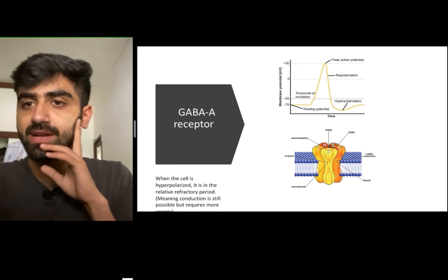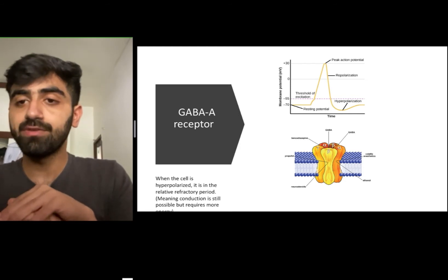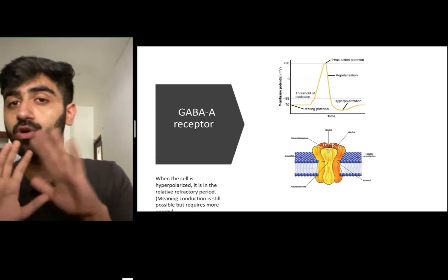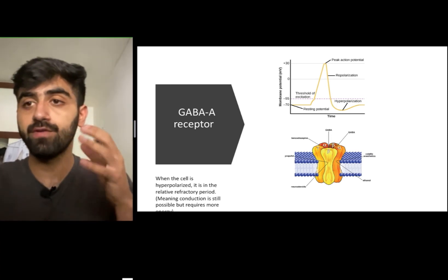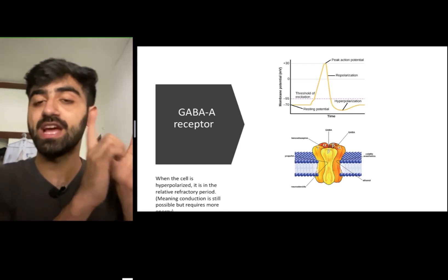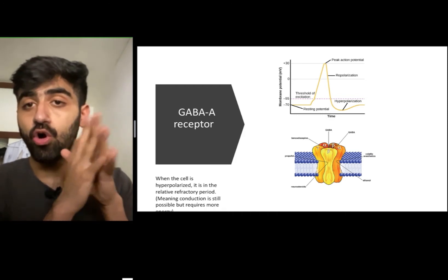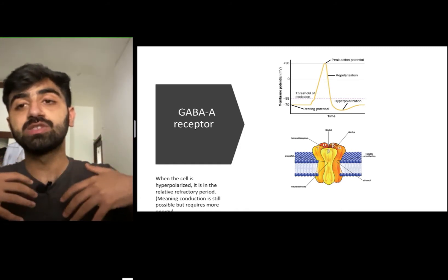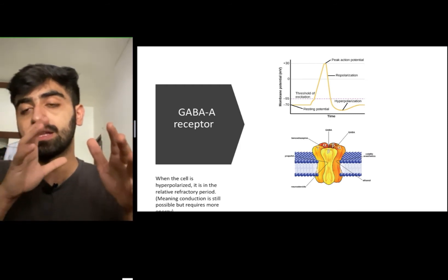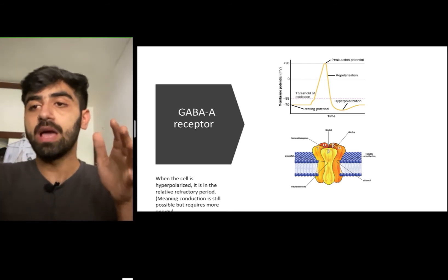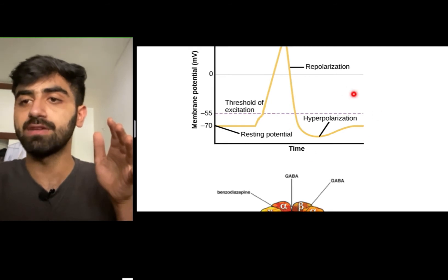This is a slide on the GABA-A receptor. Whenever the cell is hyperpolarized, it's in the relative refractory period. The absolute refractory period is when conduction of a nerve impulse in a neuron after it has conducted one action potential is almost impossible — when it's impossible, that's the absolute refractory period. When it requires more energy, more charges, more polarization to conduct an action potential, that's the relative refractory period. Hyperpolarization is part of the relative refractory period.